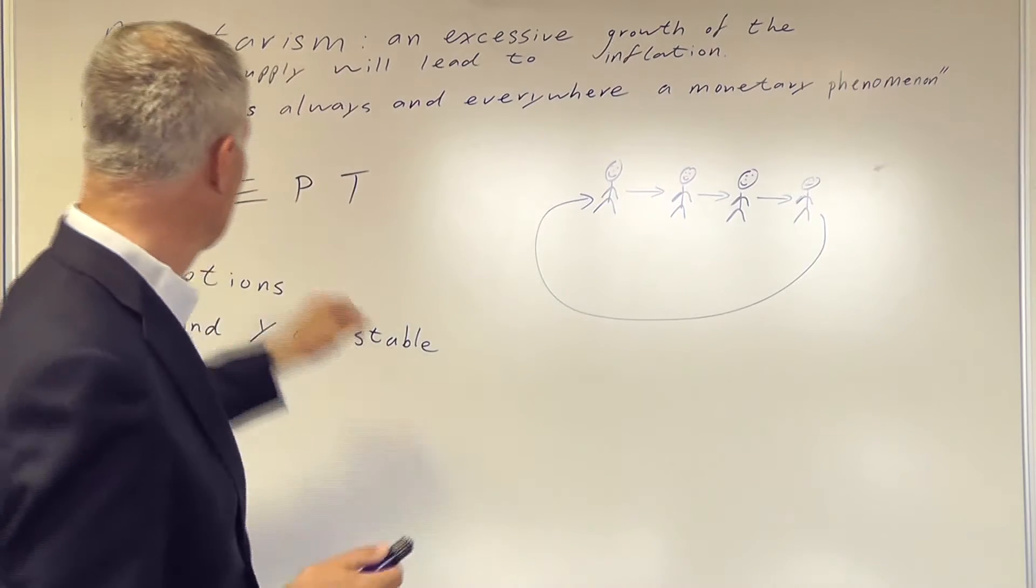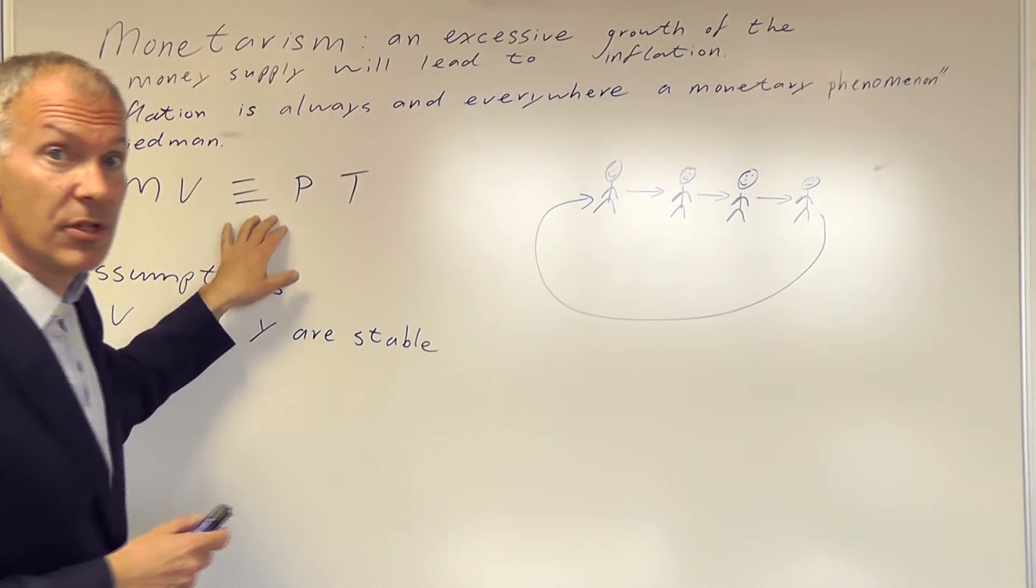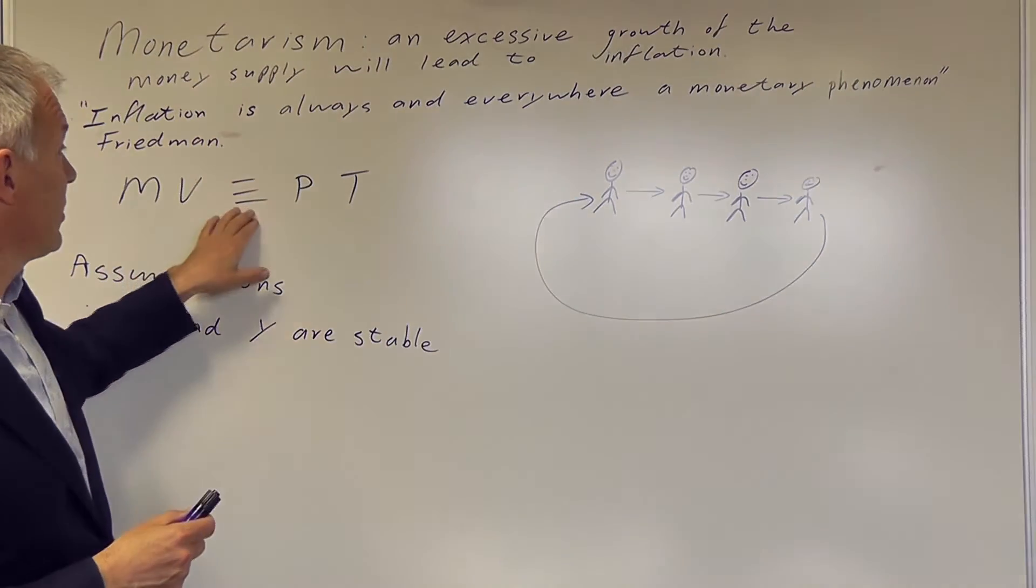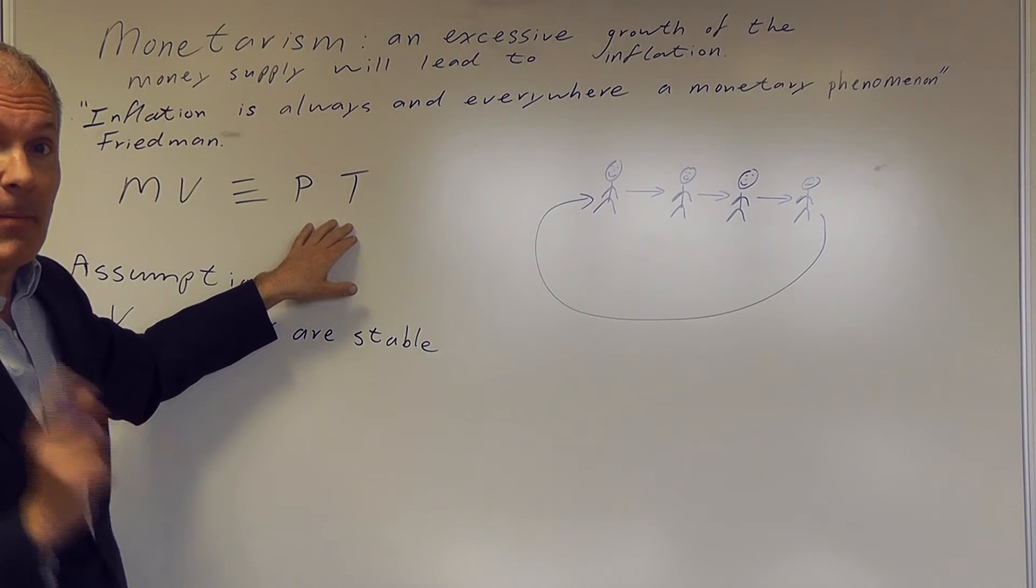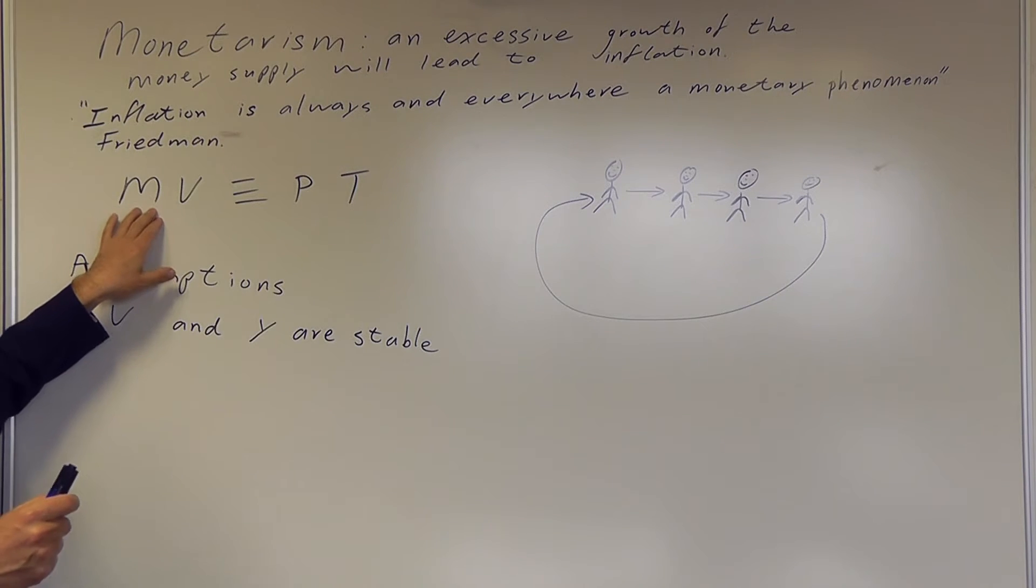So this is based on the Fisher equation, which is a simple equation here. MV is an identity with PT. So basically MV equals PT. The M stands for the money supply.